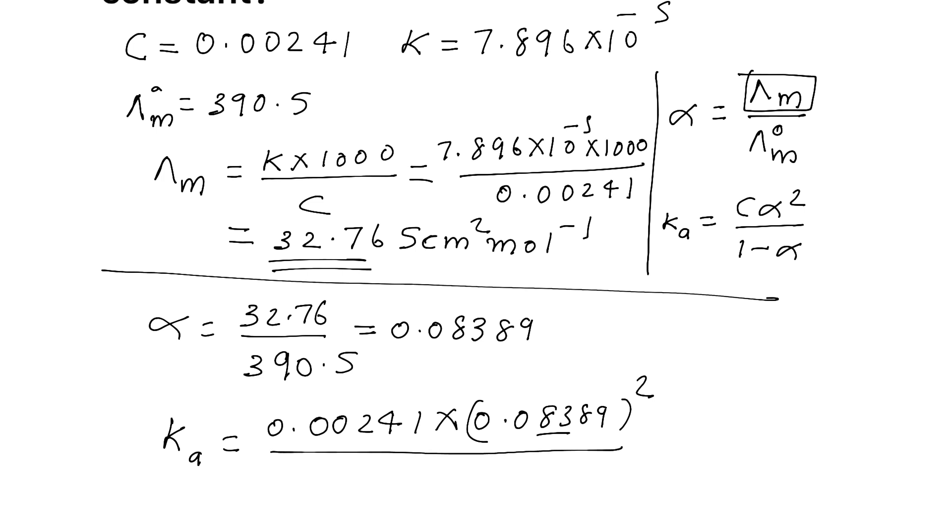Now, minus, also, by 1 minus 0.08389. Use 0.084. Round off it like that. Now, you have to calculate this by yourself. Now, what is fine answer? Answer 1.86 into 10 raised to minus 5.